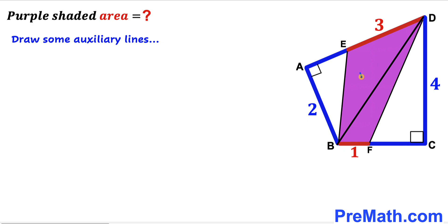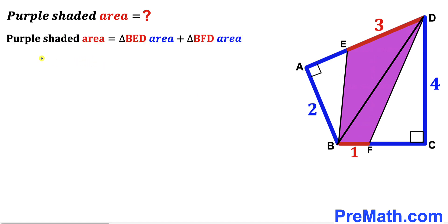The two triangles are triangle BED and triangle BFD. We can observe that the purple shaded quadrilateral area is going to be equal to the sum of these two triangle areas — the area of triangle BED plus the area of triangle BFD.